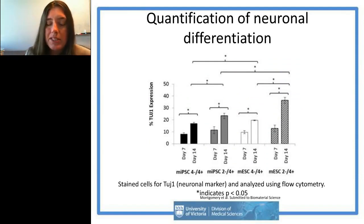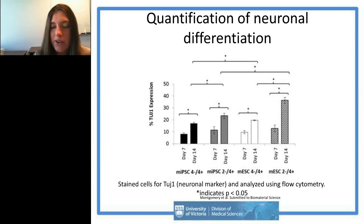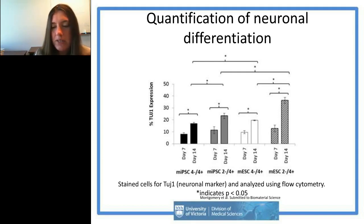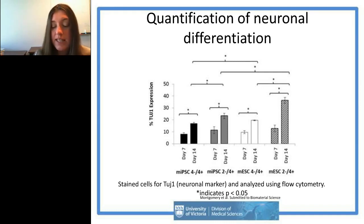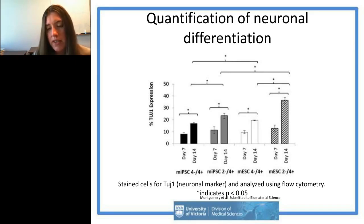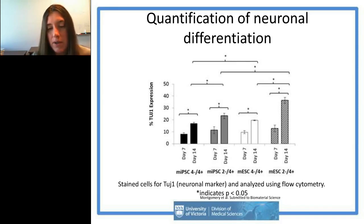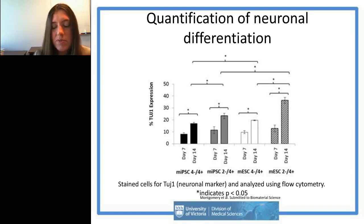Using our flow cytometer we quantified neuronal differentiation for each cell type. For all groups we saw significantly more neuronal differentiation after 14 days compared to 7 days, which is expected. The shorter protocol using retinoic acid and purmorphamine — the 2+4 protocol — produced significantly more neurons at day 14 for both groups. We also generated significantly more neurons with mouse ESCs versus mouse iPSCs, which was consistent with the literature but interesting to confirm.